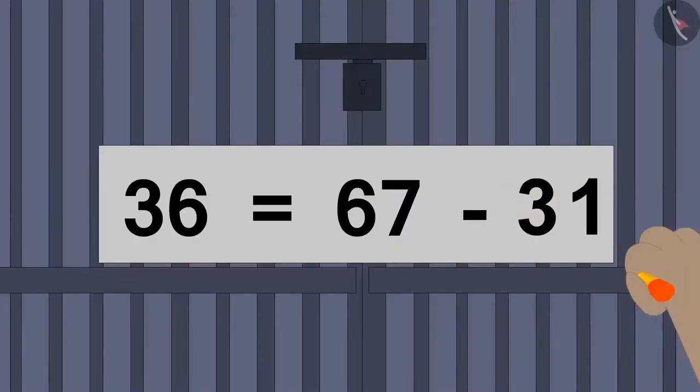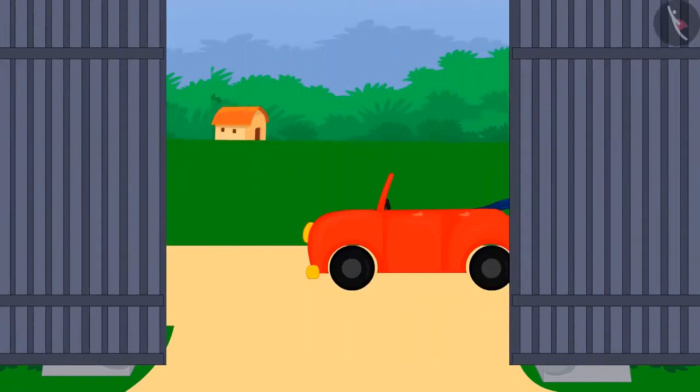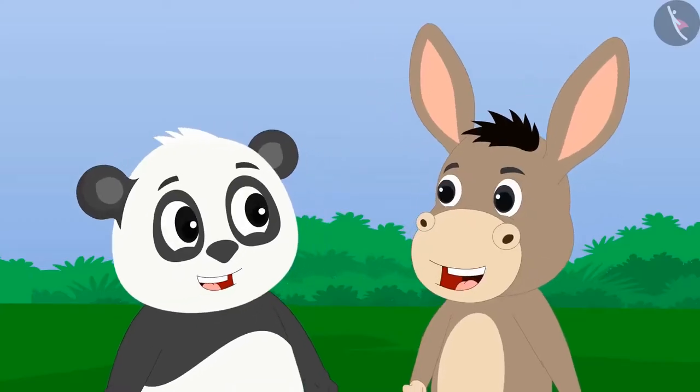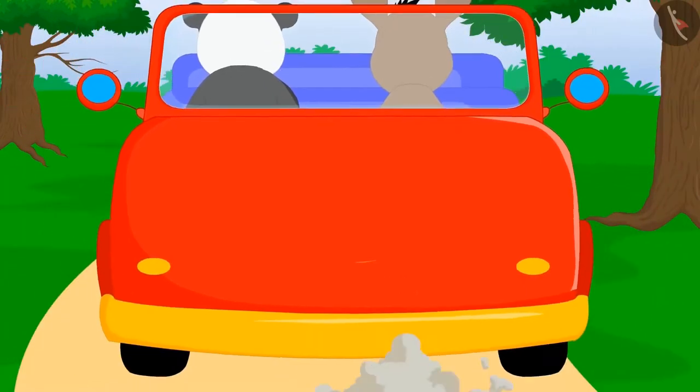Bholu wrote the number 31 in the blank space. As soon as the gate opened, there appeared a shining car in front of Golu and Bholu. They sat in the car and returned home happily.